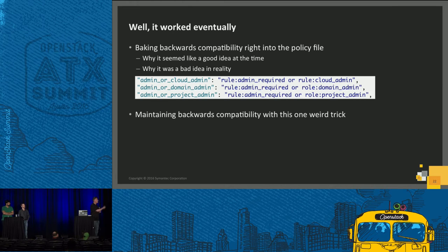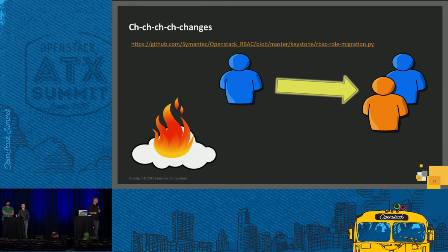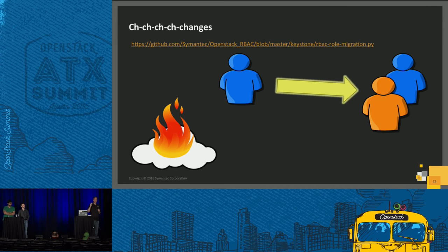Here's what we ended up doing, and it worked very well. We have a migration script available on GitHub. It iterates through the existing role assignment list and finds the four roles we really cared about bringing forward: admin in domain, admin in project, member in domain, and member in project. It then additionally assigns the equivalent new-style role — so if you previously had admin in domain X, the script gives you also domain_admin in domain X. A key point: it only adds the new roles, it does not remove the old roles. Once you have this setup, you don't need that interim policy file at all — you can go directly to the final version that only respects the new roles.